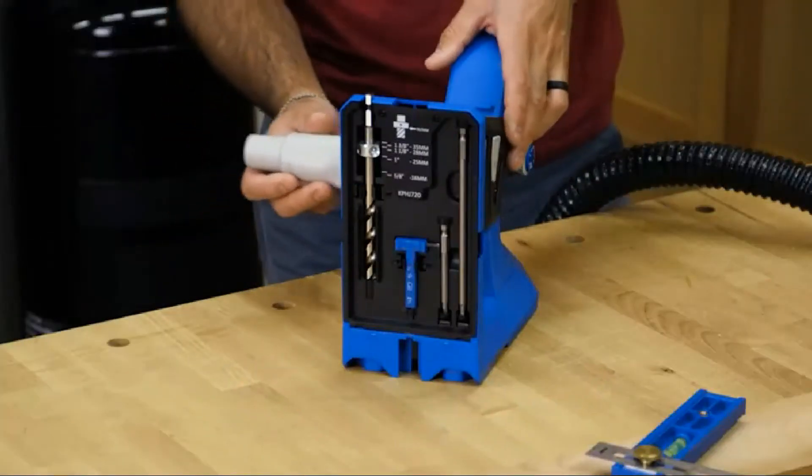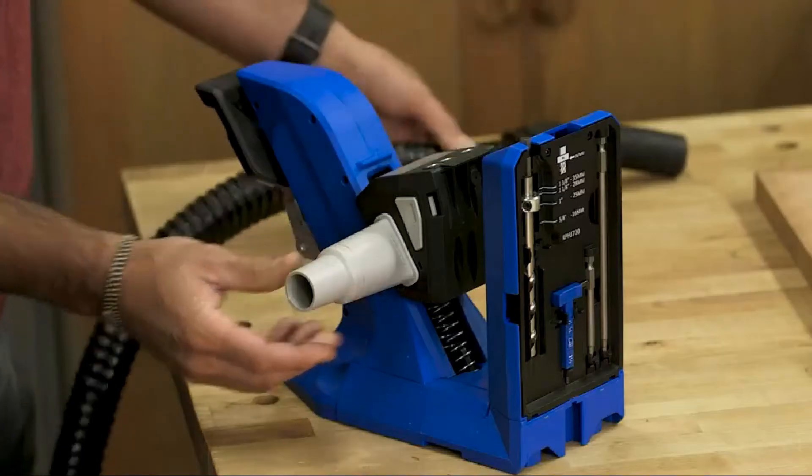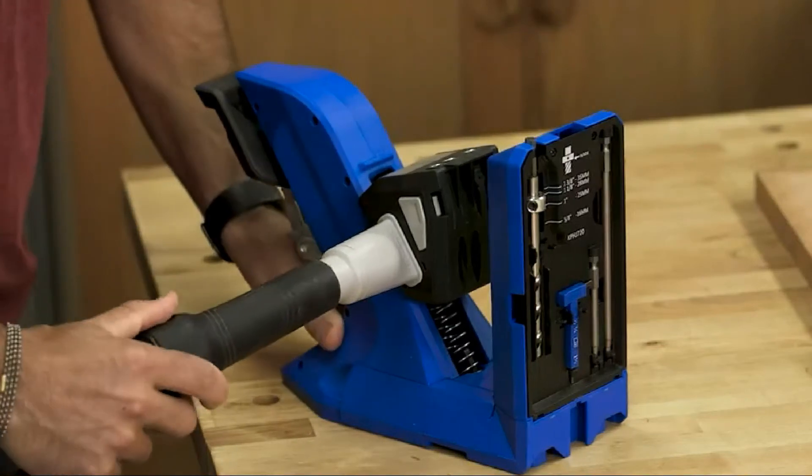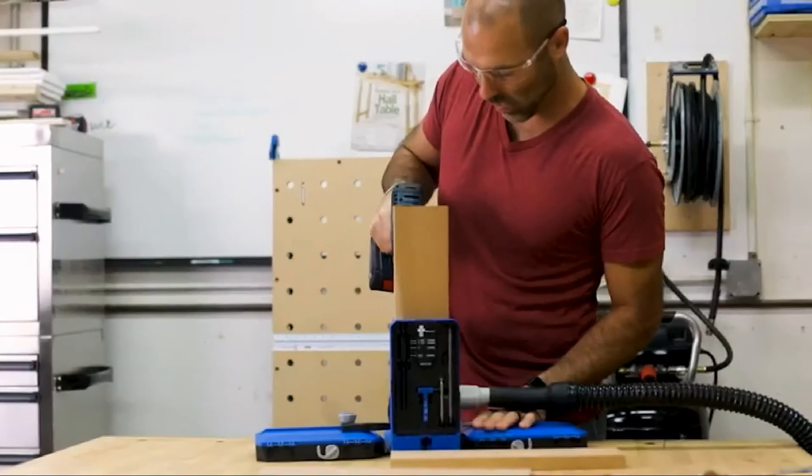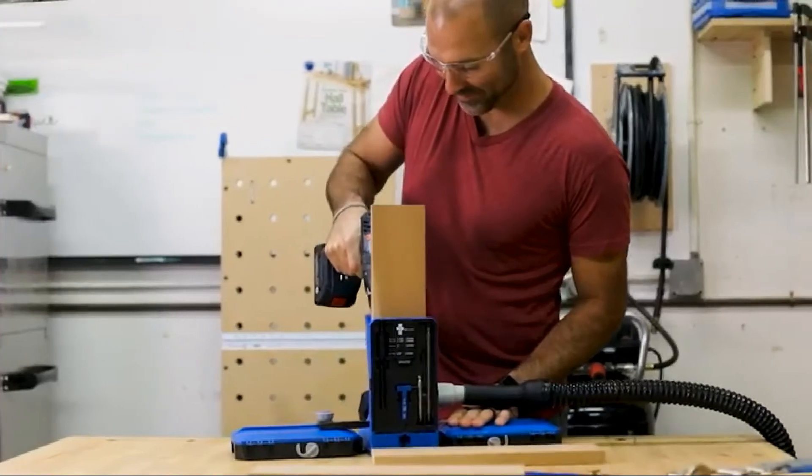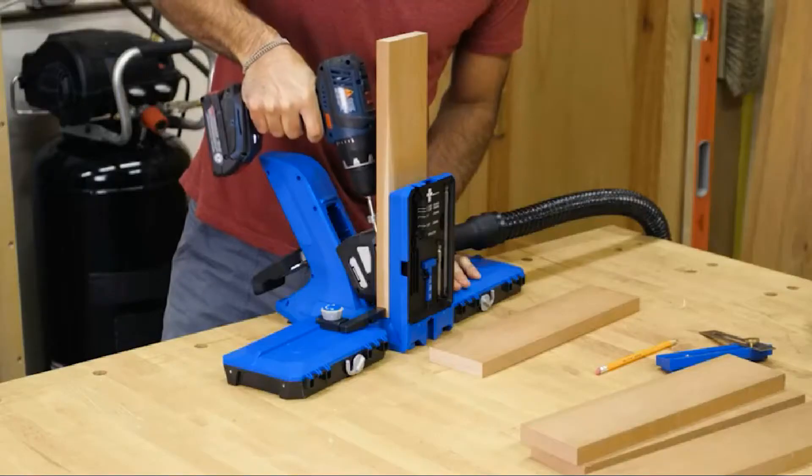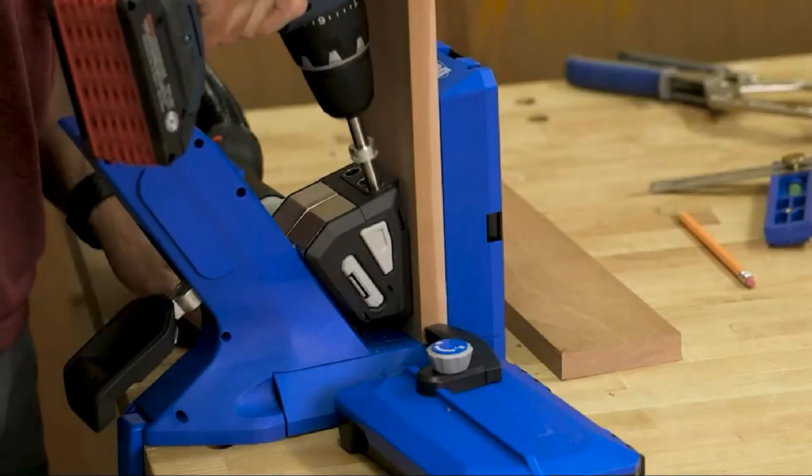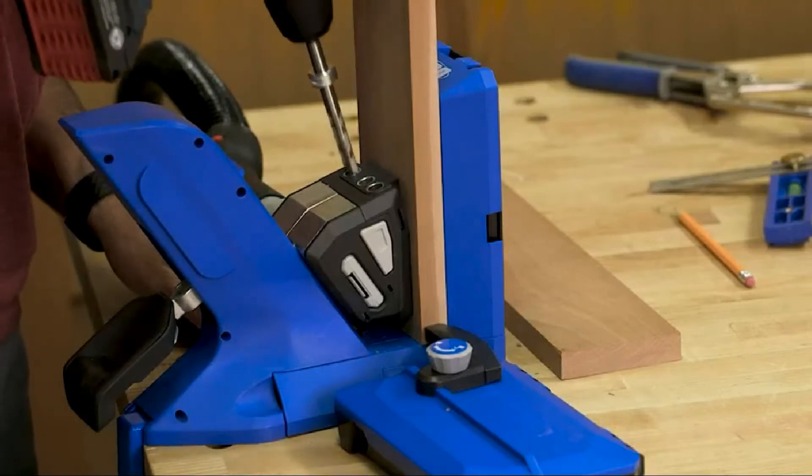The Kreg pocket hole jig 720 Pro also comes with a dust collection blade. Slide it in from either side and connect to a vacuum hose, and sawdust and debris will get pulled out of the way as you drill. This does more than just help minimize the mess—pulling the chips out of the way helps you drill pocket holes faster too.